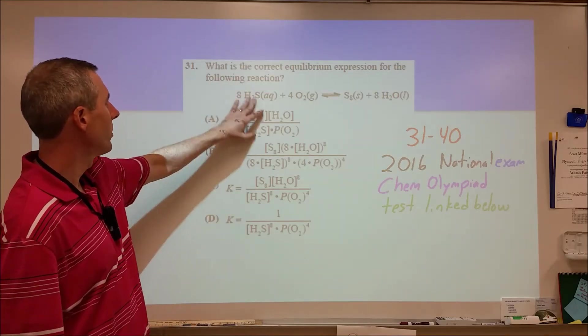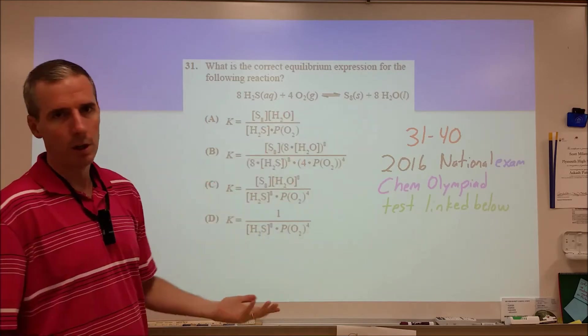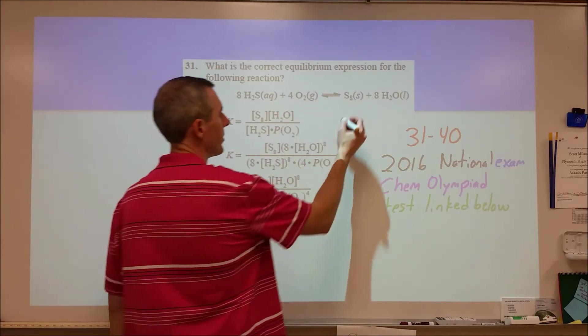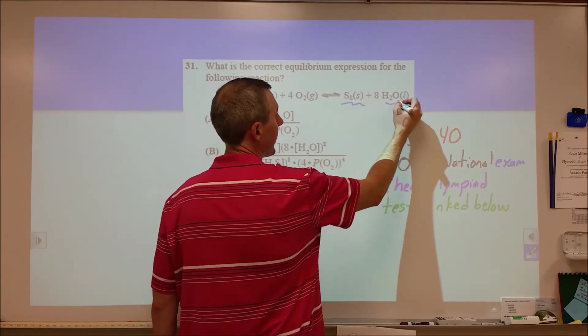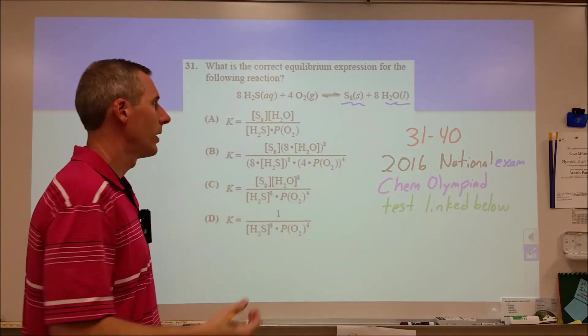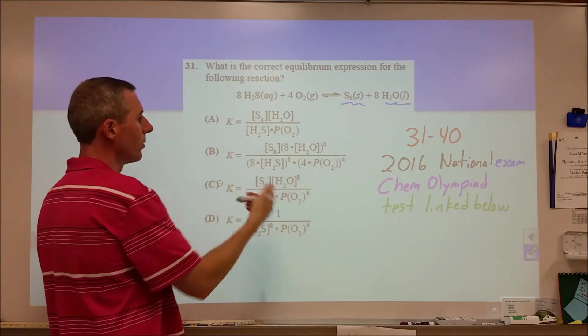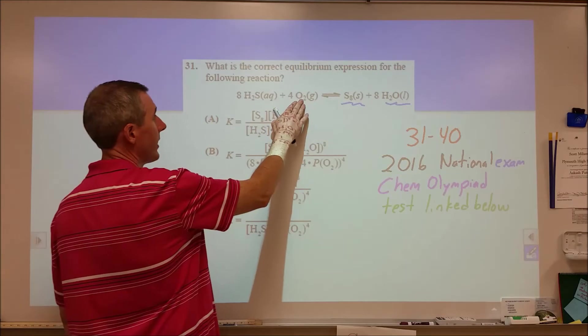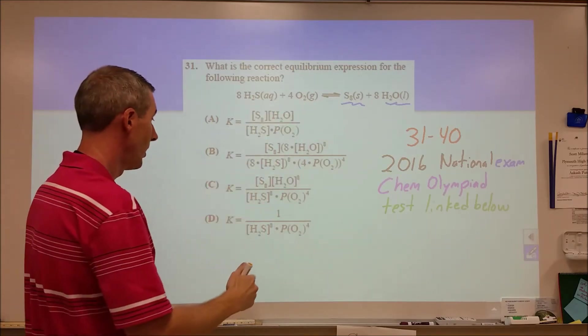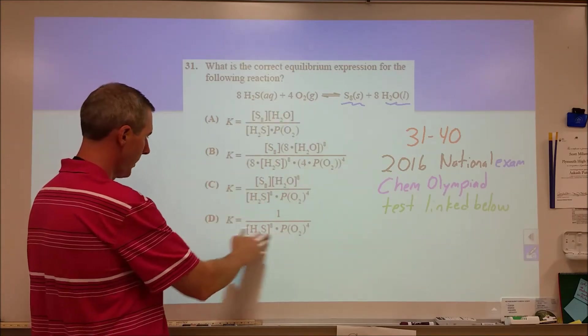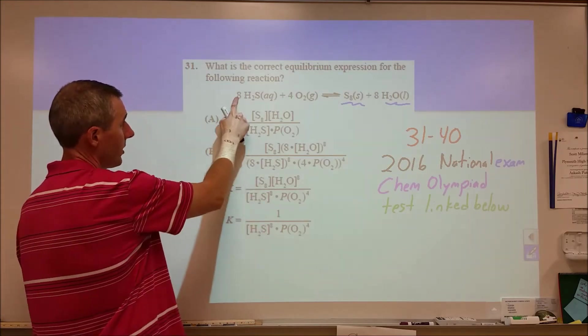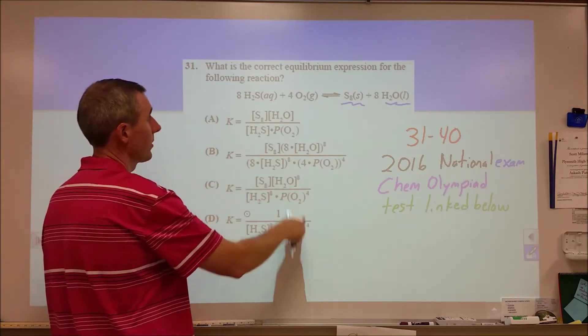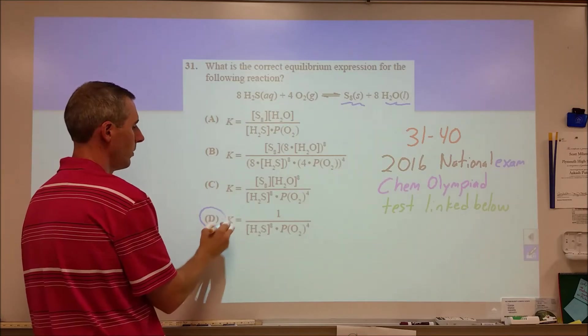Here we have a pretty simple question about the equilibrium expression for this particular reaction. The key to note is that solids and liquids have an activity of 1, they're constant, so those don't factor into the equilibrium expression. We're really just looking at the oxygen gas and the hydrosulfuric acid. So we have hydrosulfuric acid to the 8th power and the pressure of oxygen to the 4th power. D would be the answer.